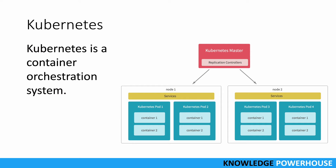Here you can see there is a Kubernetes master controlling different replications, and there are different nodes - Node 1, Node 2 - and in each node you have pods, and pods have containers. This is a very high-level architecture of Kubernetes.